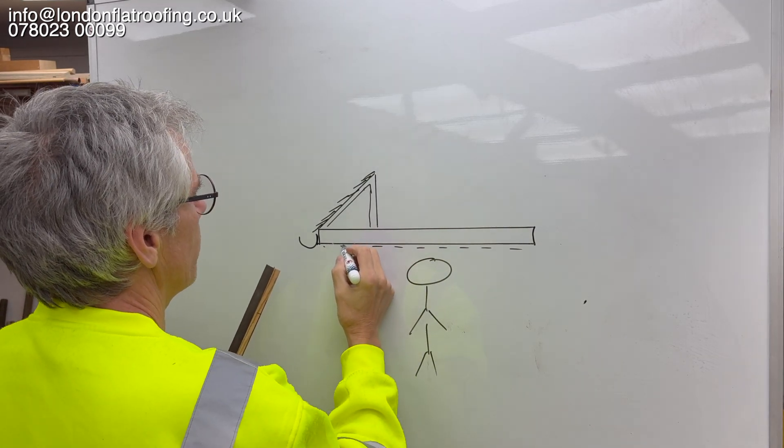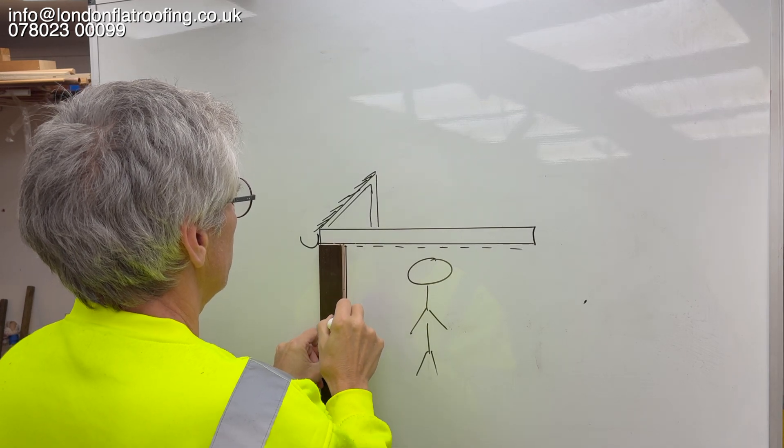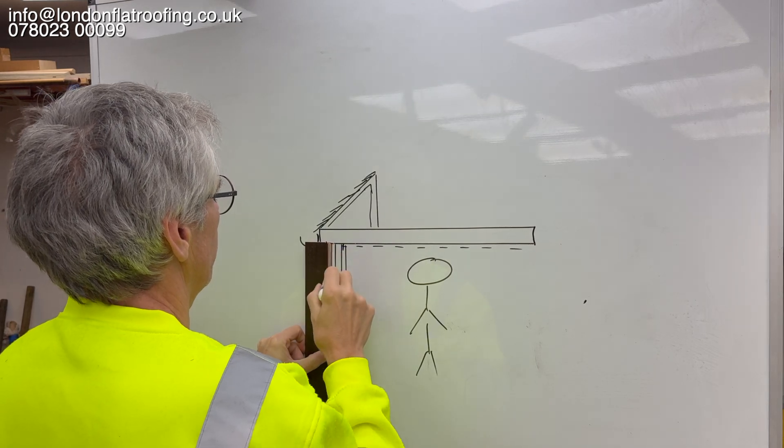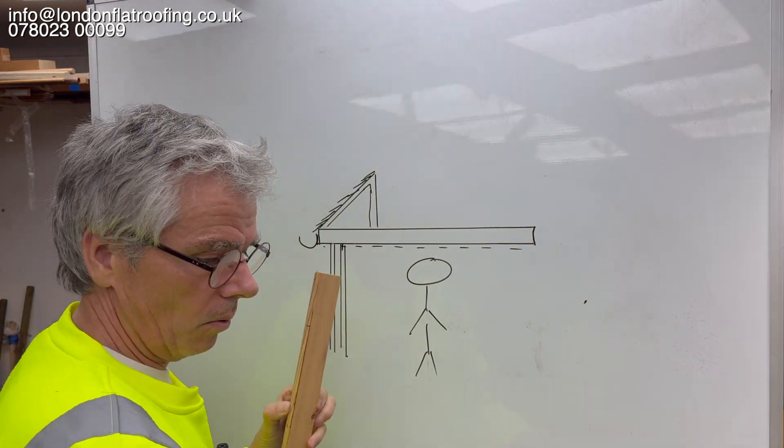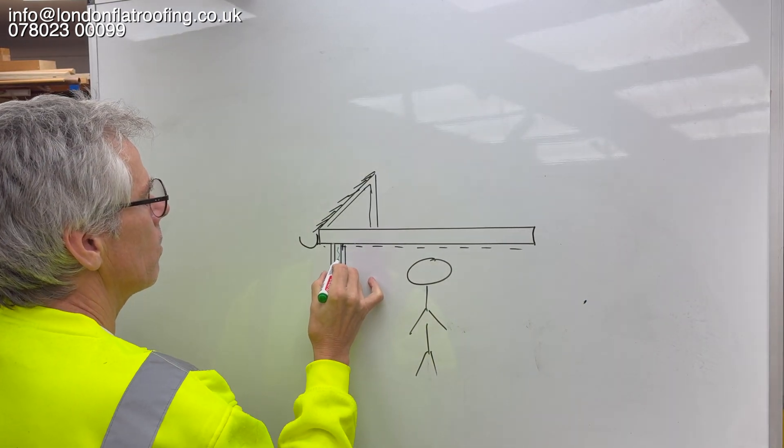Now this all overhangs the building. So coming down here, you've got your cavity walls which is like so, and inside your cavity wall you've got your thermal insulation.